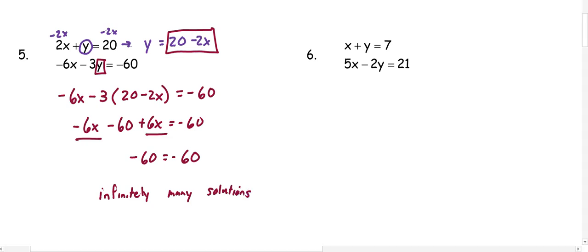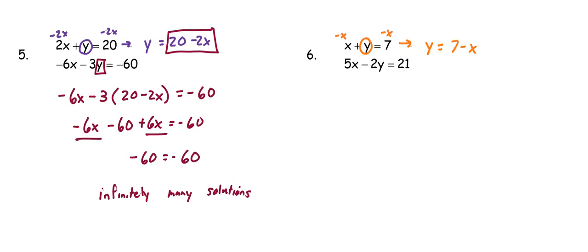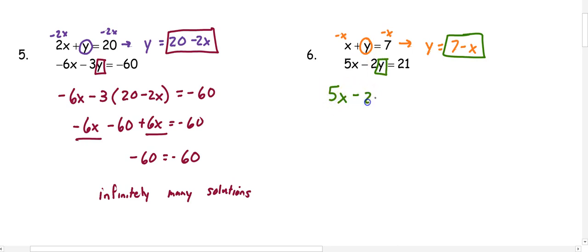Let's look at one more problem before we get into word problems. In number 6, we have x plus y equals 7, and 5x minus 2y equals 21. When both variables have a coefficient of 1, it doesn't matter which variable you solve for. I'm going to solve for y, so I subtract x from both sides to get y equals 7 minus x. I substitute what y equals into the other equation: 5x minus 2 times the quantity 7 minus x equals 21.